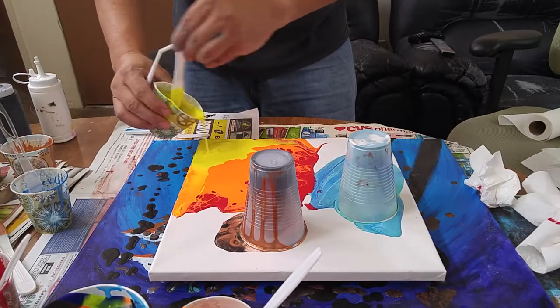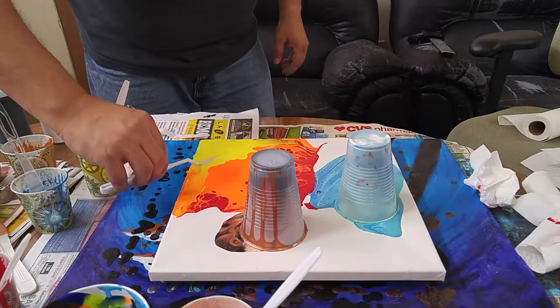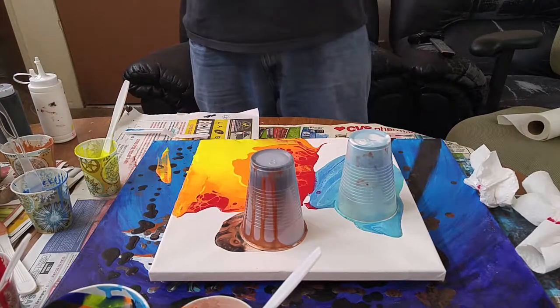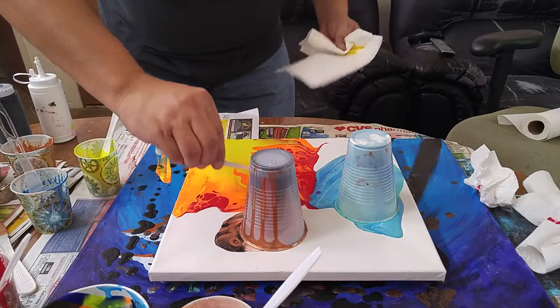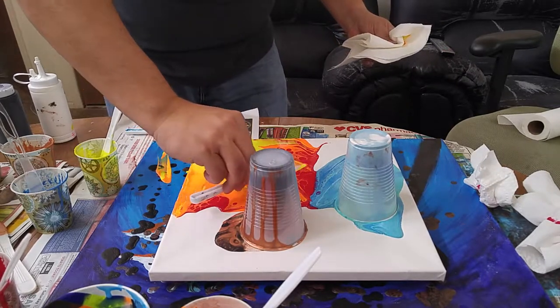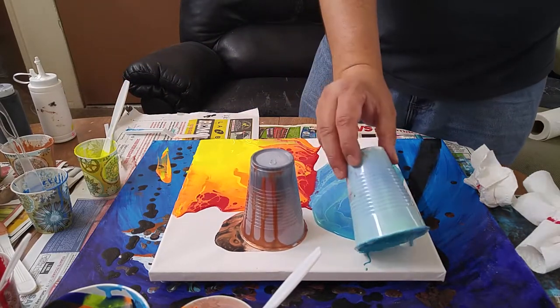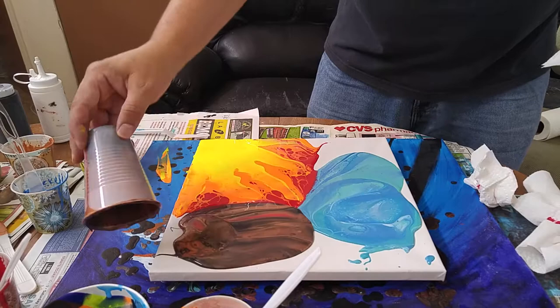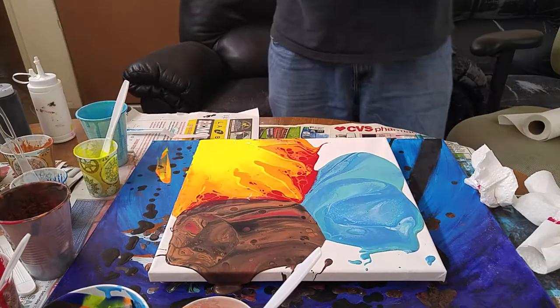Put a little bit more yellow in there. Okay. Silking is going to be the tricky part.